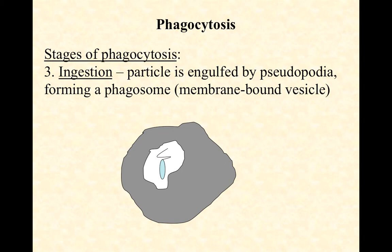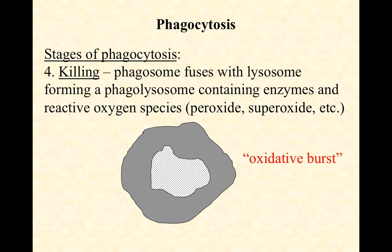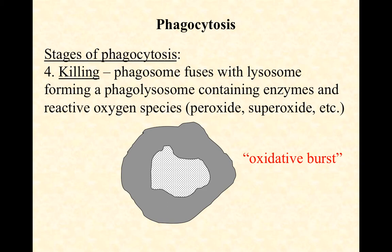Ingestion: the particle gets engulfed by pseudopodia — extensions of the cytoplasmic membrane — forming a vesicle called a phagosome. This alone doesn't kill the pathogen because the fluid surrounding the microbe is just extracellular fluid. The phagosome must fuse with a lysosome to form a phagolysosome, which contains hydrolytic enzymes like proteases and nucleases to chew up macromolecules. At the time of fusion, reactive oxygen species — hydrogen peroxide and superoxide — are created. This is the oxidative burst: the killing phase, where the pathogen is reduced to bits and fragments.